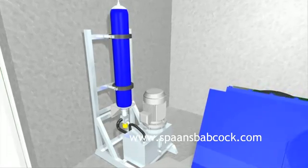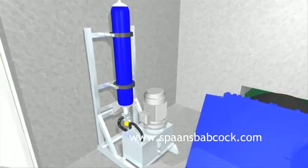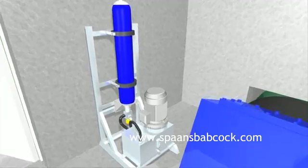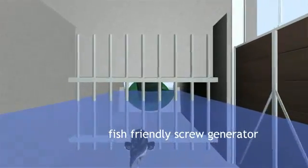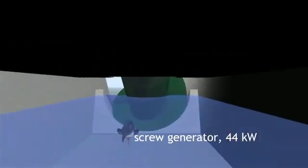The flow enters the fish-friendly screw turbine, causing the screw to rotate between the upper and lower bearings. The rotating screw turns the gear unit, which in turn rotates the generator.